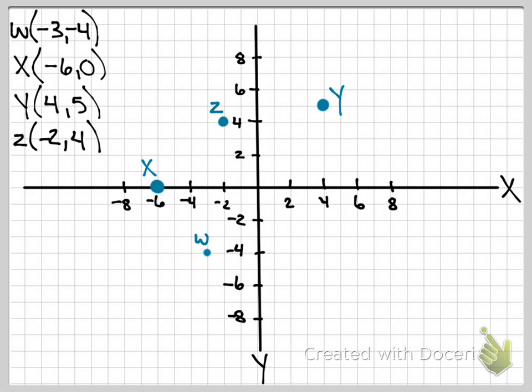What is the location of point W? Quadrant 3. Roman numerals, guys. Some people are still writing numbers. Point X, what is its location? X axis. Point Y, what is its location? Quadrant 1. Point Z. Quadrant 2.